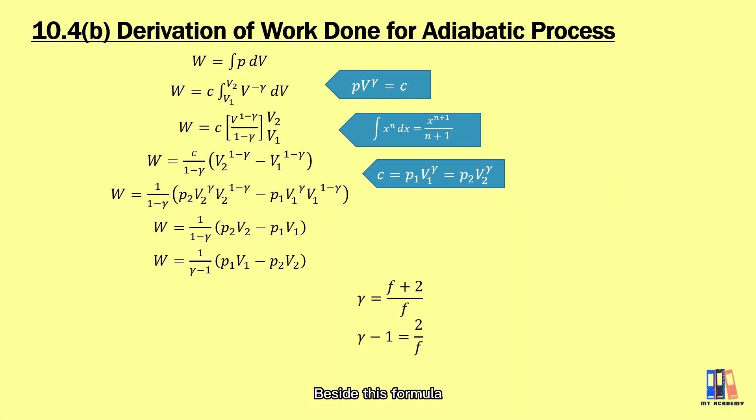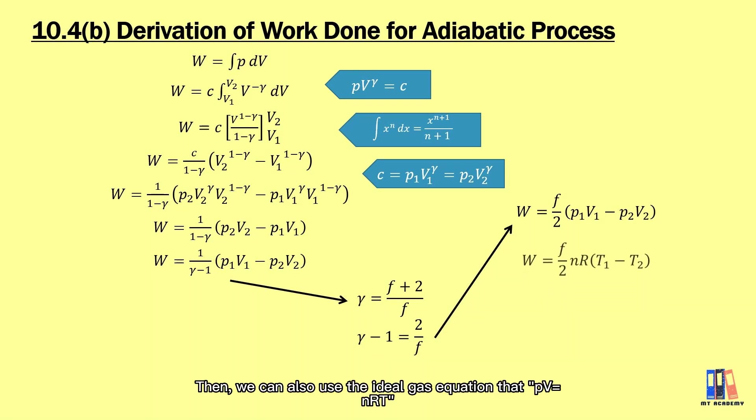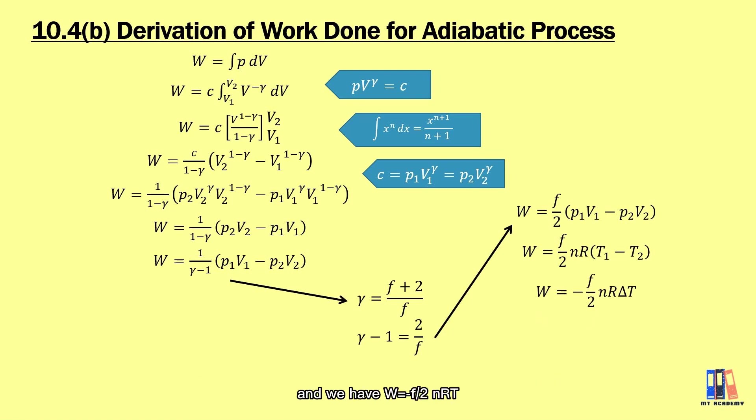Beside this formula, we have also learned about gamma is equal to F plus 2 over F from the previous chapter. We can substitute this formula into the equation that gamma minus 1 is 2 over F. So we have W equal to F over 2 multiply the bracket of P1V1 minus P2V2. And then we can also use the ideal gas equation that PV equal to nRT and we have W equal to negative F over 2 nR delta T which is one of the formulas for internal energy that we have learned in chapter 9.